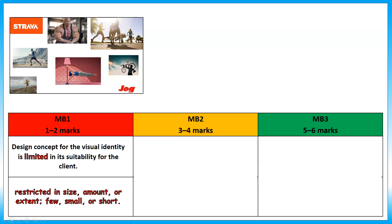Now let's look at three mood boards. Starting with the bottom mark band — 'limited' — what markers generally don't like in mood boards is gaps between the photos. They like a funky layout with overlapping pictures, which isn't there at the moment. It's also about appropriateness: a muscly bodybuilder is probably not appropriate for a running mood board. There's no color palette, only one font, and we have inappropriate images — a lady swinging on a lamp and somebody with a bike — so it's not completely appropriate for purpose.